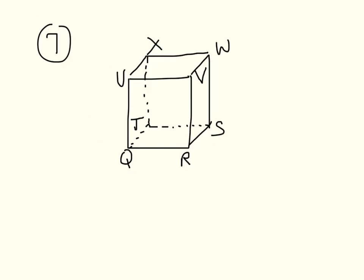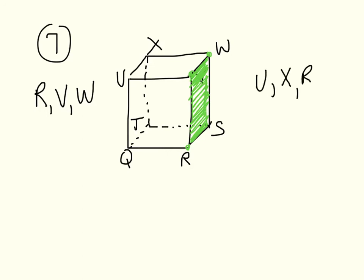Problem seven: shade the plane that contains points R, V, and W. R, V, and W are all on the right side of the box, so you shade the right face. As an extra example, points U, X, and R would define a plane that cuts diagonally through the prism. Your plane may be a side of your rectangular prism or it may cut through the center of it.